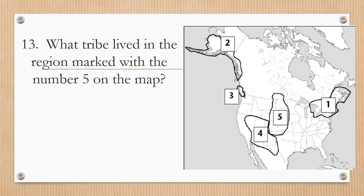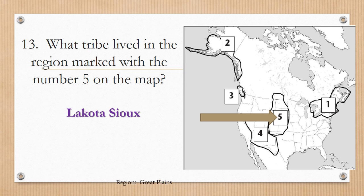Number thirteen: what tribe lived in the region marked with the number five on the map? Hopefully you said the Lakota Sioux. The region you need to remember for this tribe is the Great Plains.